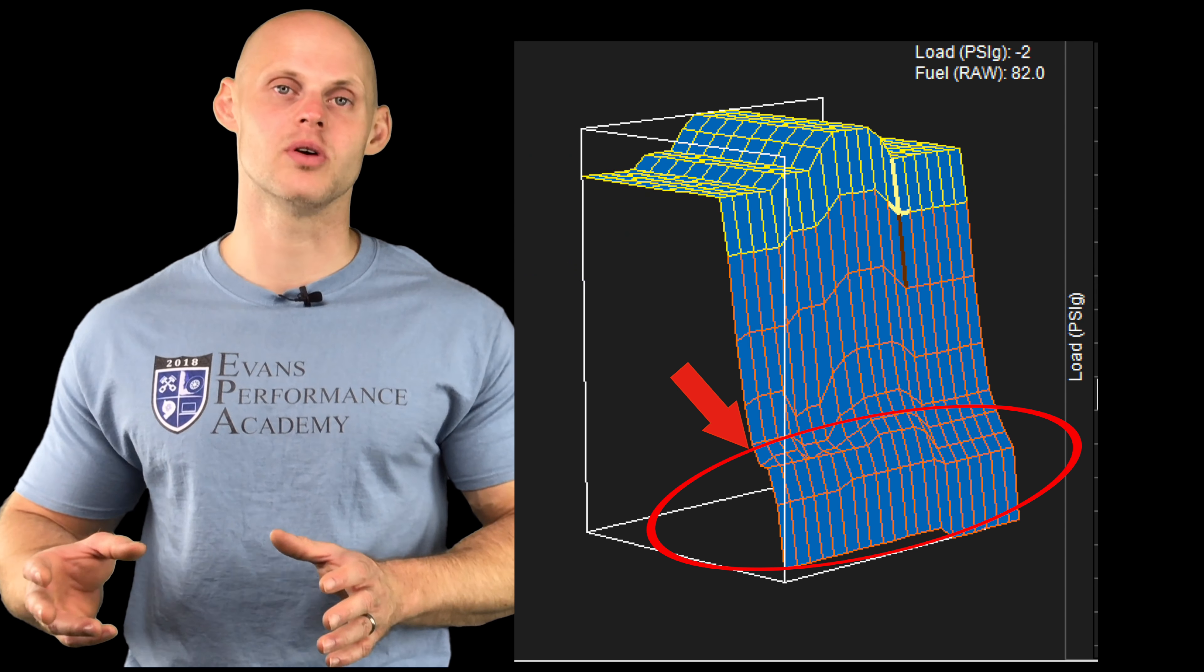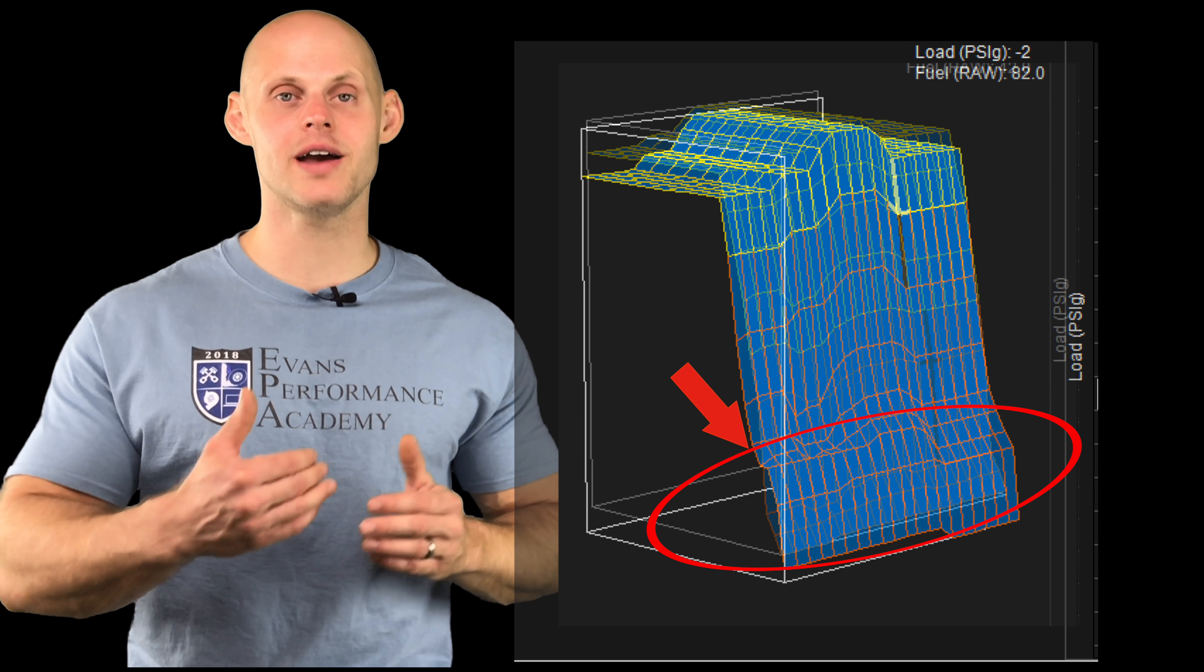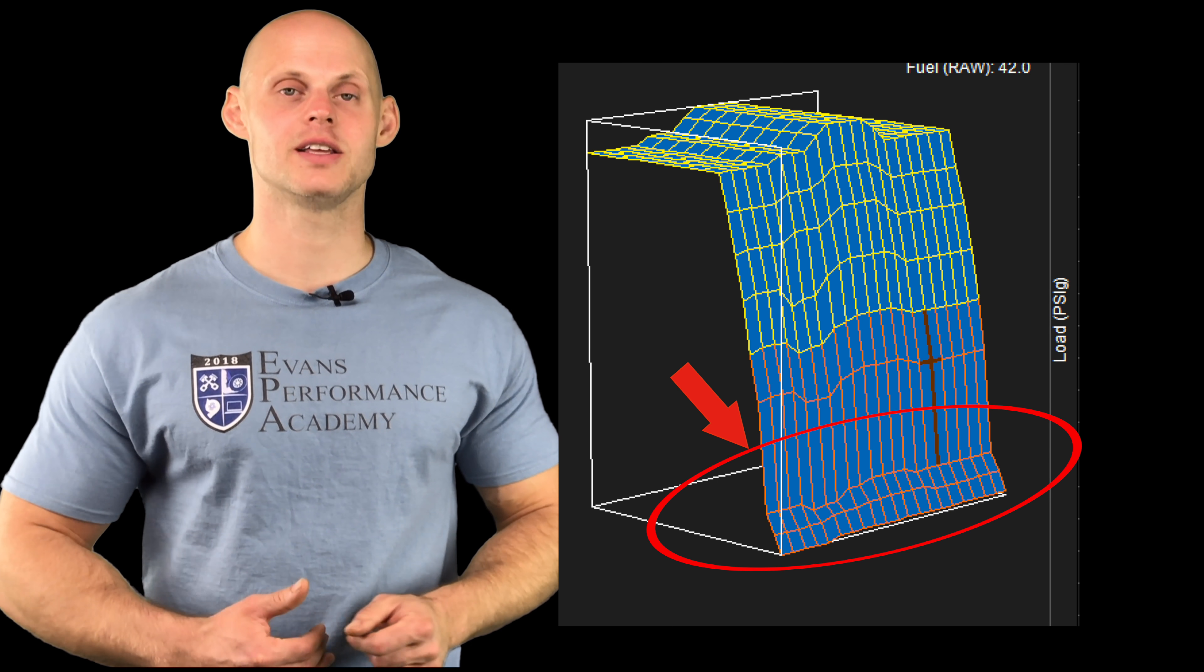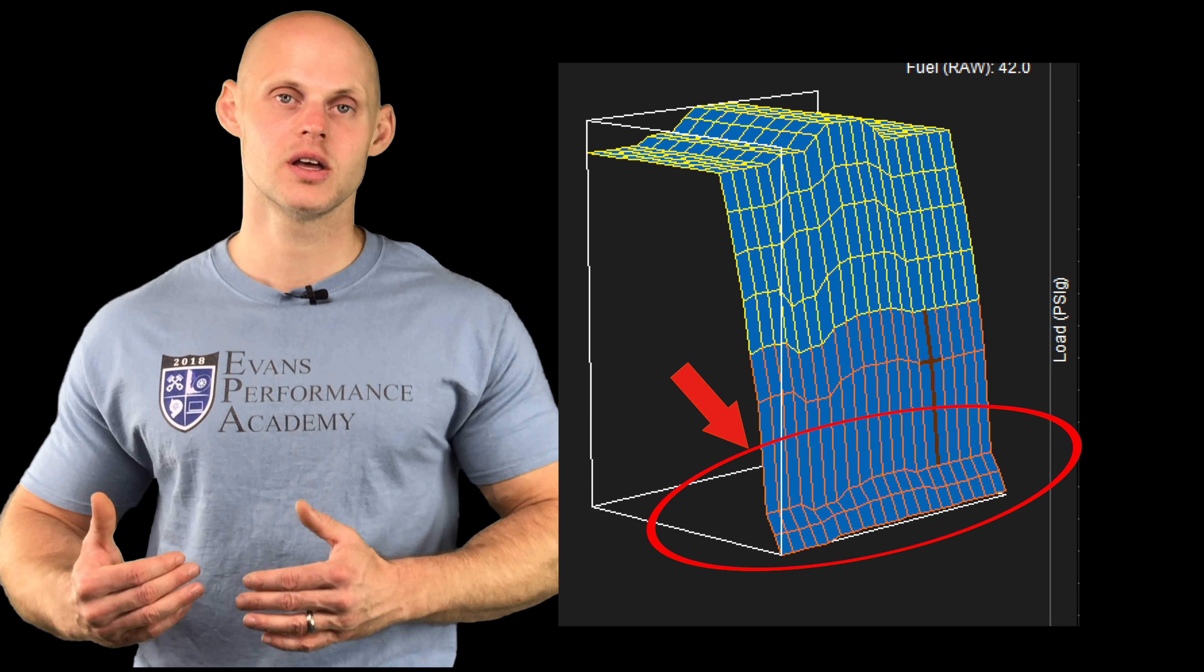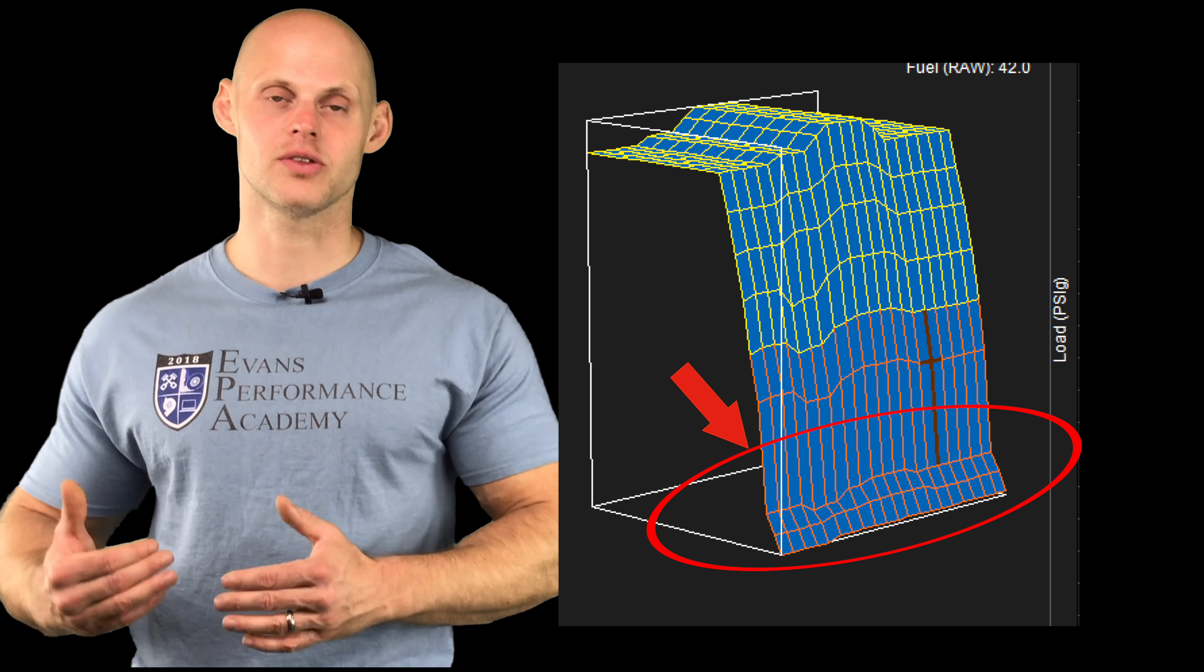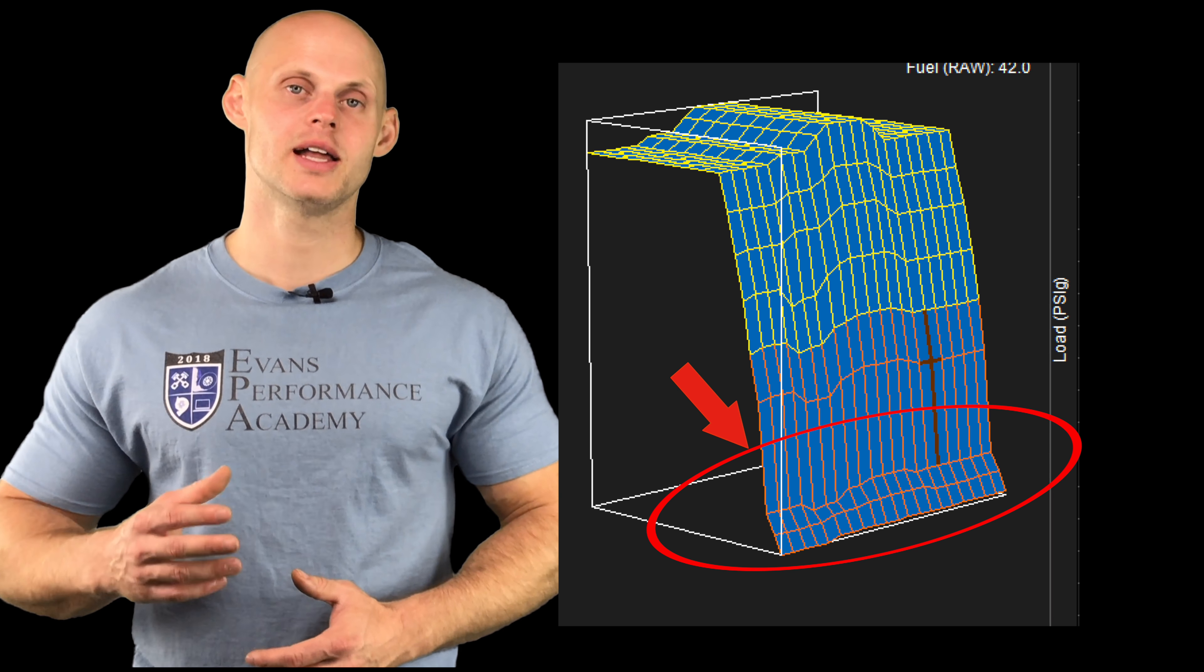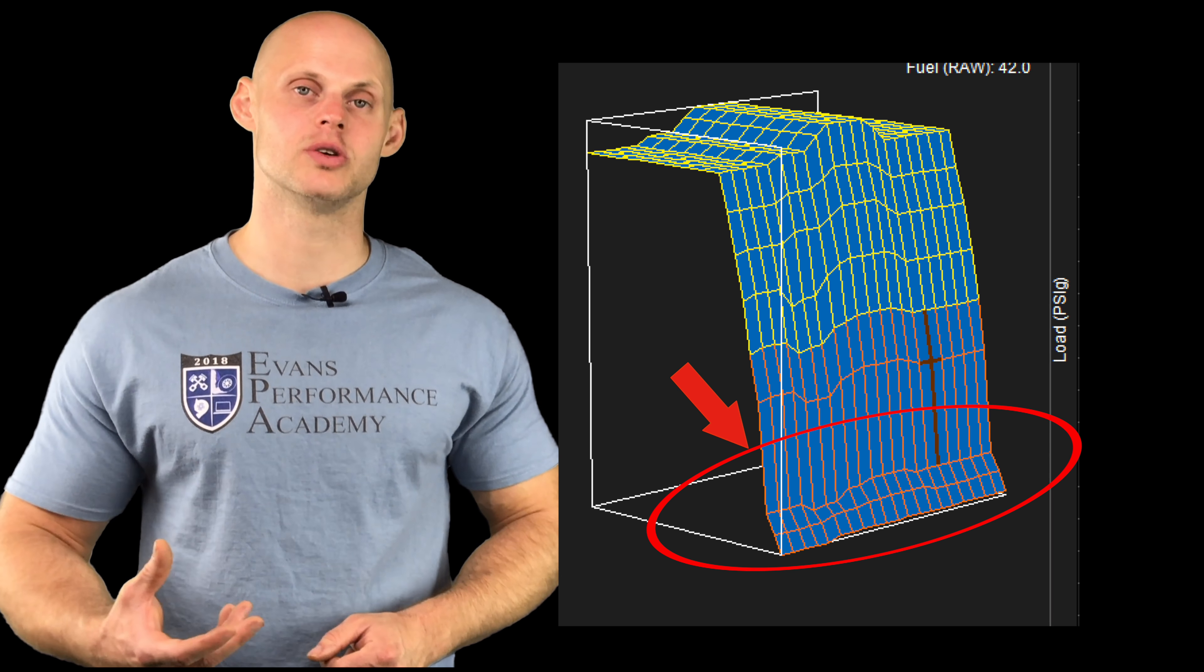Now, likewise, if we have too high of a dead time value, we're going to be finding that we have to really decrease the area at idle and light throttle and part throttle driving. We're going to have to really pull down the table and it's going to have a non-linear shape or look to it.